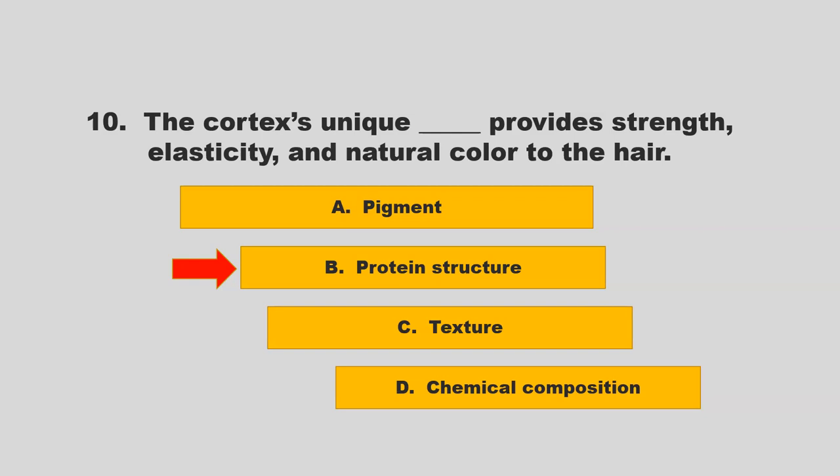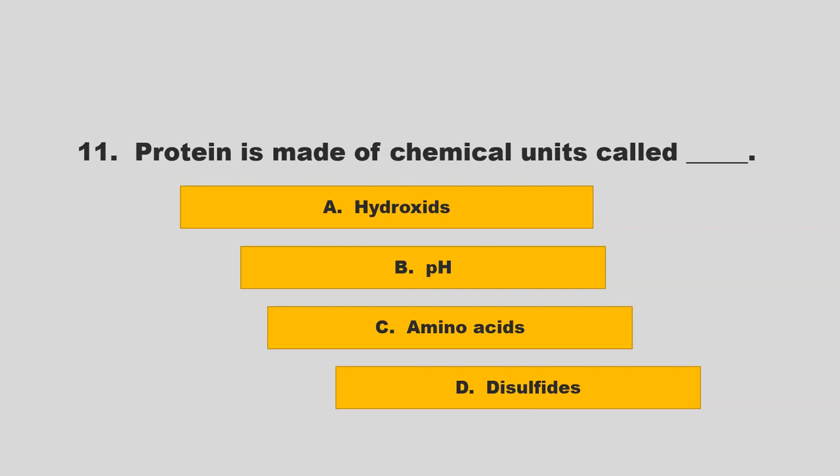Protein is made of chemical units called blank. Is it hydroxides, pH, amino acids, or disulfides? If you chose C, amino acids, you are correct.